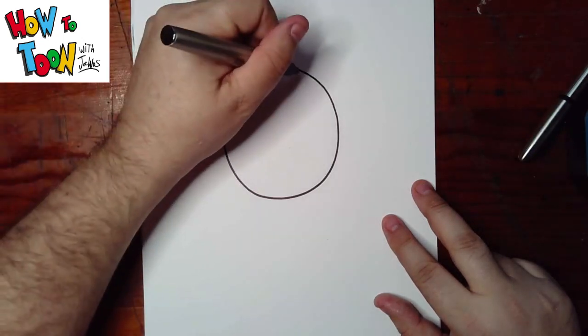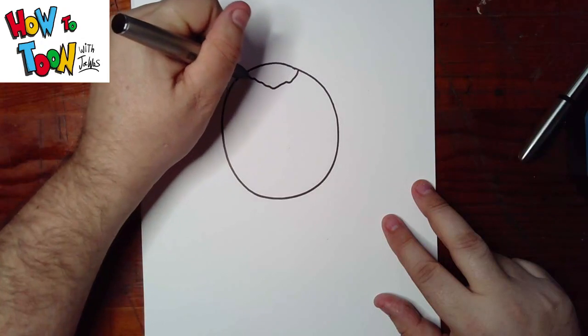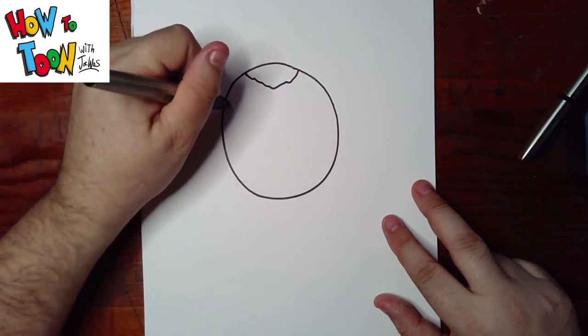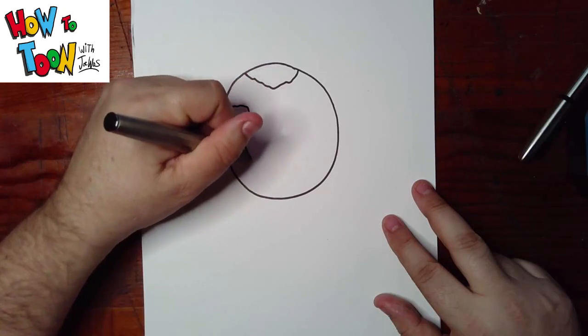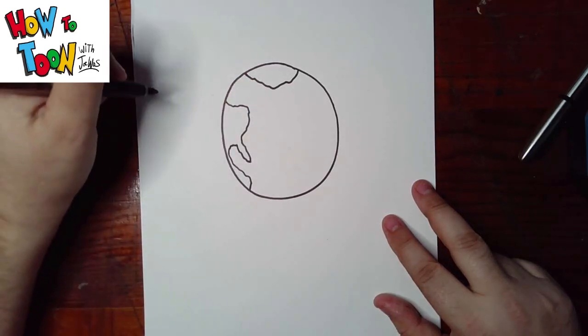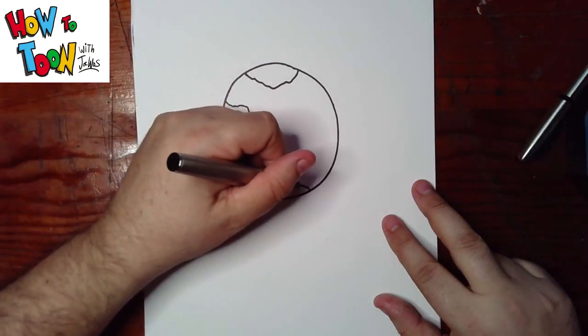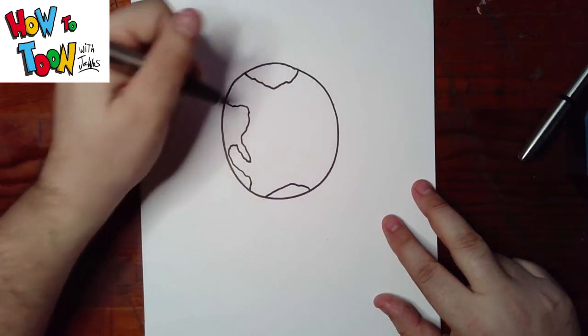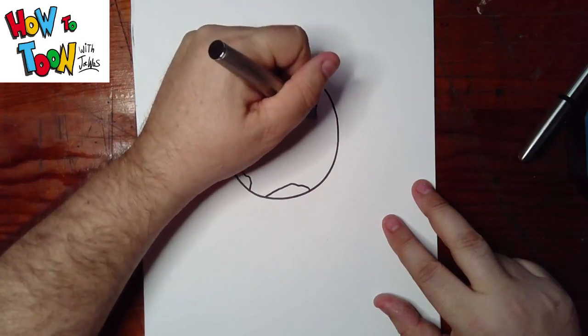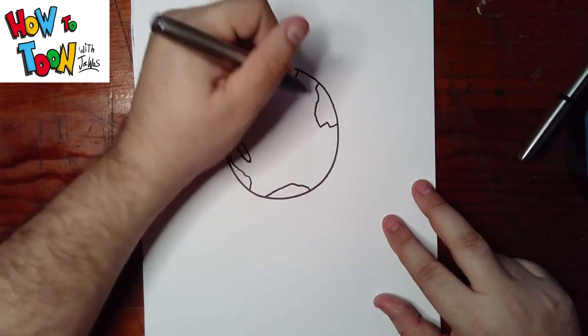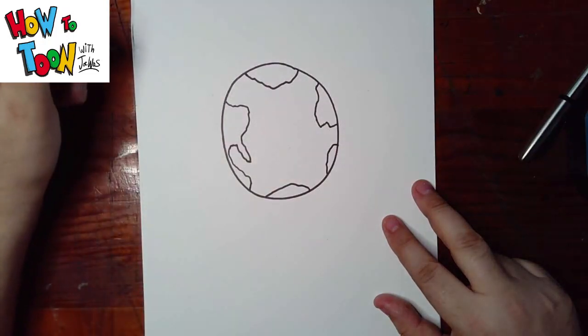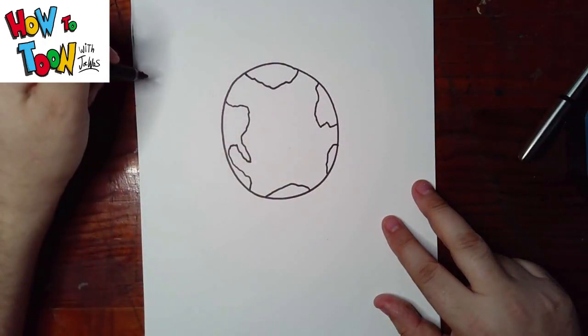Then it's a couple of land masses. Now, they don't have to look exactly like the countries. You're just trying to get approximate shapes. And you want to be sure to leave this space open, because that's where we're going to put the face. Again, we're not worried about matching exactly where the countries would go.